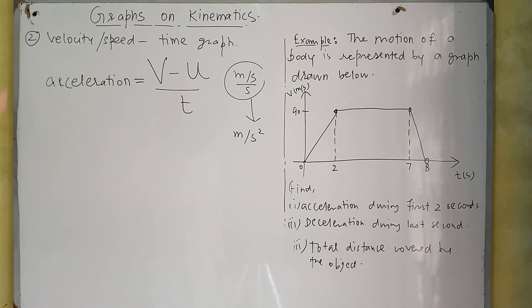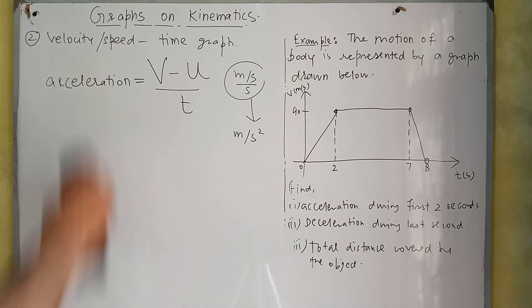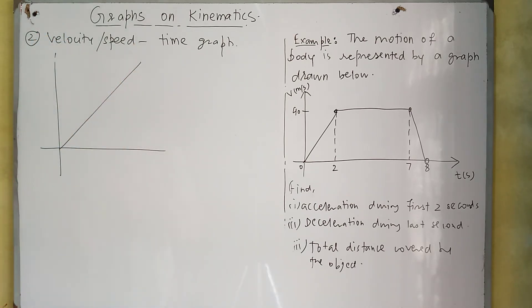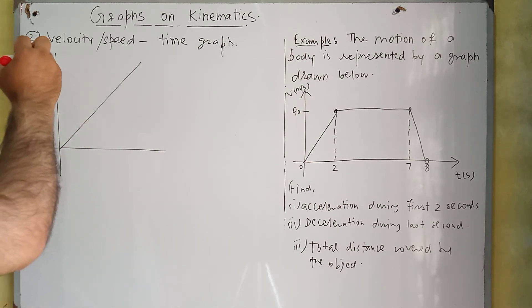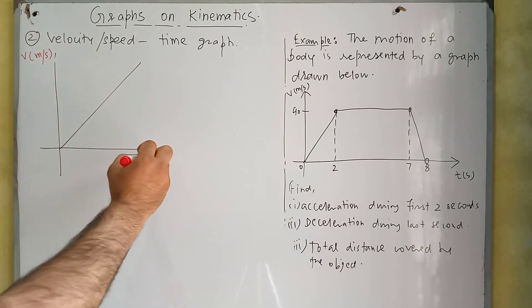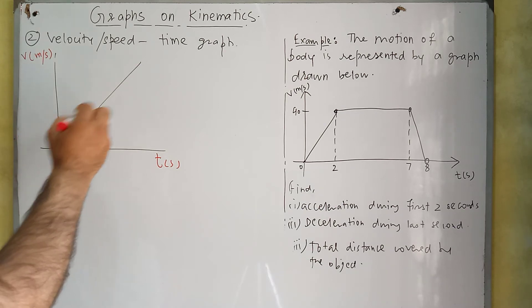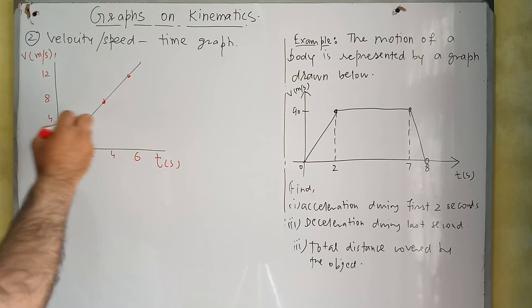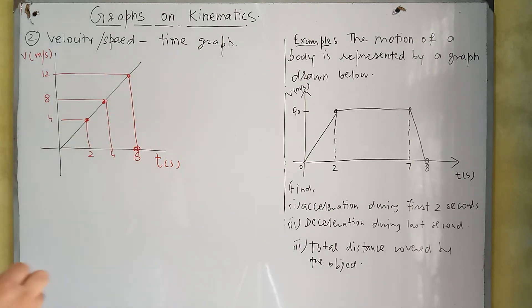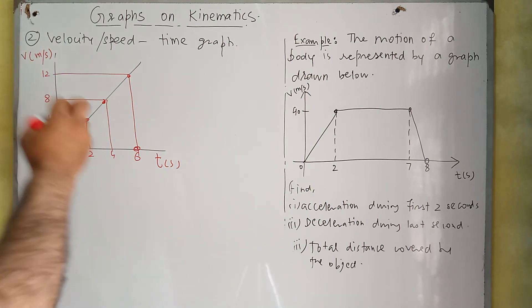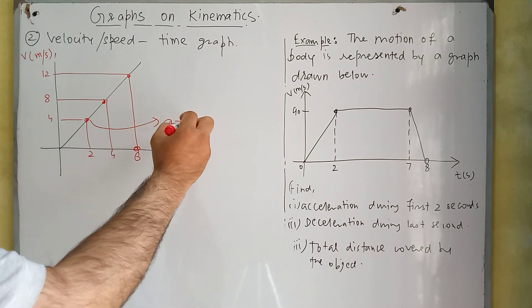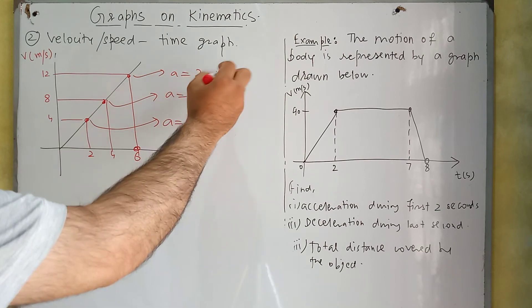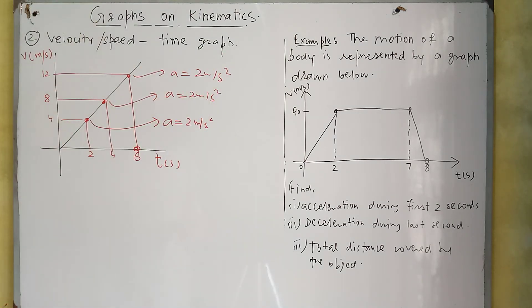Look at this graph — this is the graph of a body moving with uniform acceleration. On the x-axis we have time in seconds and on the y-axis we have velocity in meters per second. At this point the acceleration is 4 over 2, which is 2 meters per second squared. Similarly at the next point acceleration is 2 meters per second squared, and at the next point also 2 meters per second squared. At all points acceleration is uniform, so this graph represents a body moving with uniform acceleration.